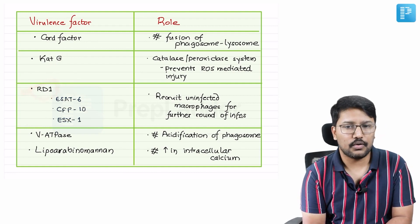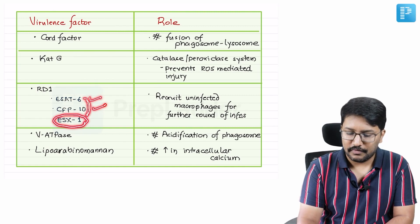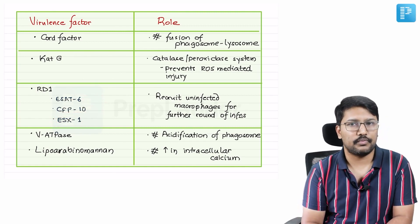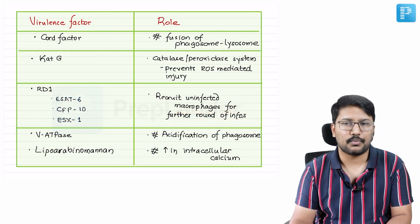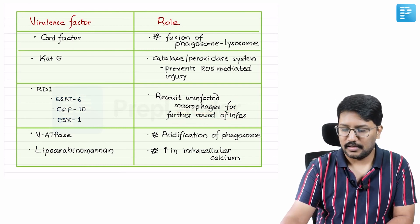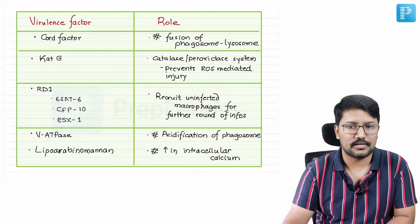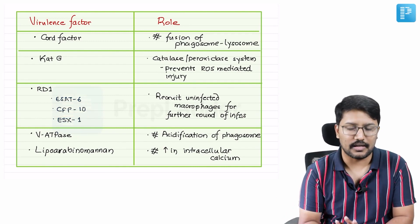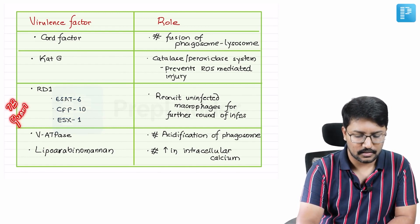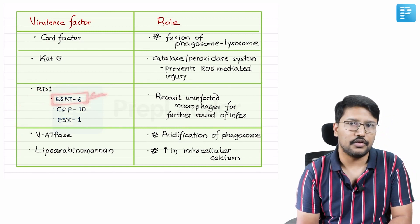There is also the RD-1 locus, which codes for ESAT-6 and CFP-10 and a secretory system required for efflux of these molecules. These molecules play an important role in recruitment of uninfected macrophages for further rounds of infection — the TH1 cells sense these, get activated, and secrete TNF-alpha, which recruits more macrophages. By challenging with ESAT-6 or CFP-10, you can demonstrate interferon gamma release. This is what we call TB Quantiferon Gold — a quantitative estimation of interferon gamma released on challenging with either ESAT-6 or CFP-10. ESAT-6 is the one most commonly used.